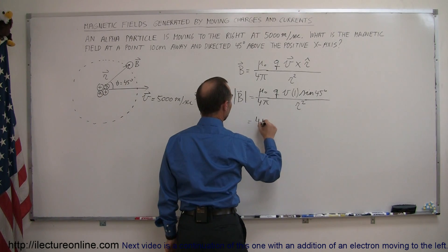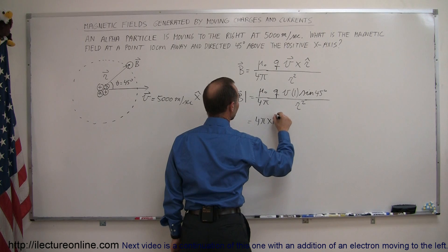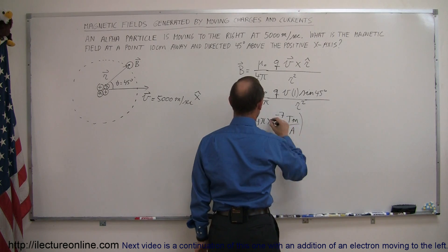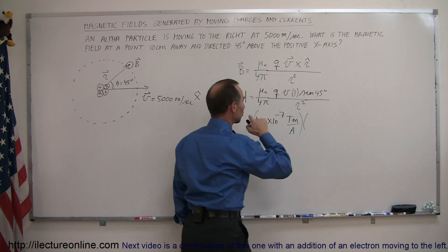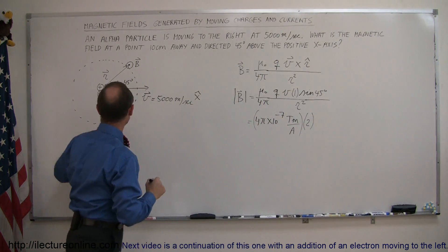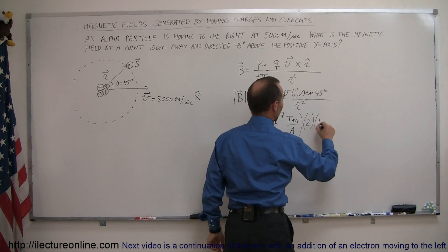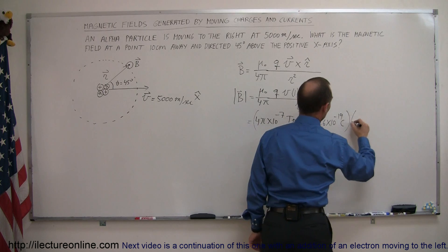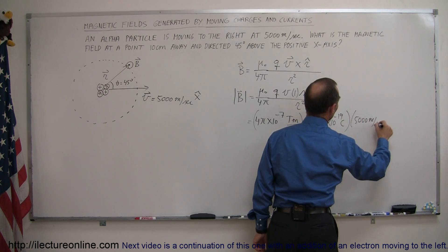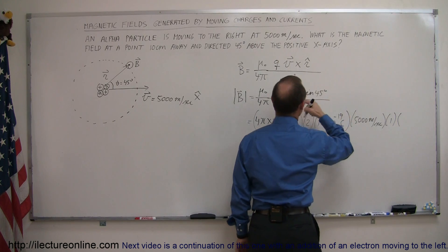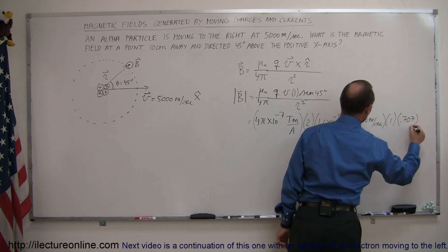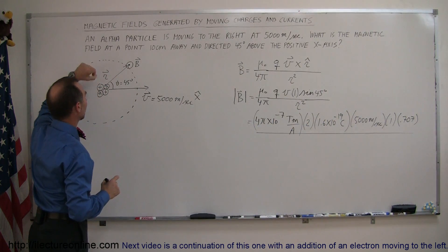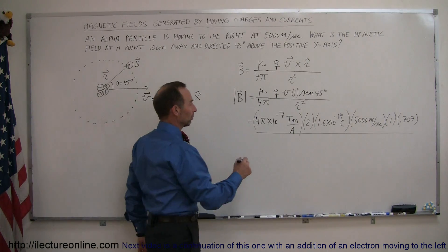This equals mu-naught, which is 4 pi times 10 to the minus 7 Tesla-meters per amp, times the charge — and there are two positive charges on the alpha particle, so that's 2 times 1.6 times 10 to the minus 19 Coulombs — times the velocity of 5,000 meters per second, times the sine of 45 degrees, which is about 0.707, divided by the length of the position vector squared. The length is 10 centimeters, so that's 0.1 meters squared.